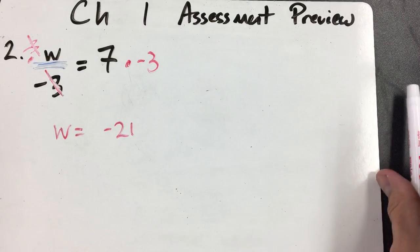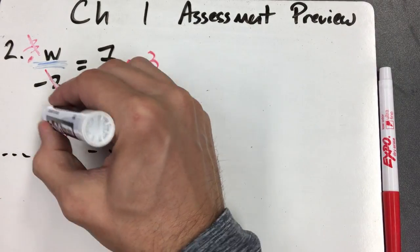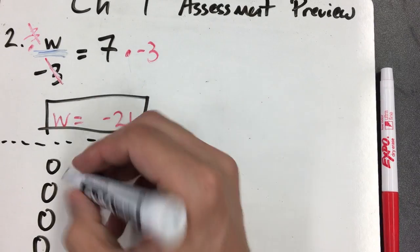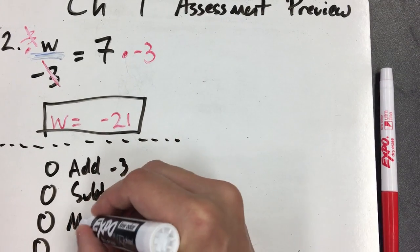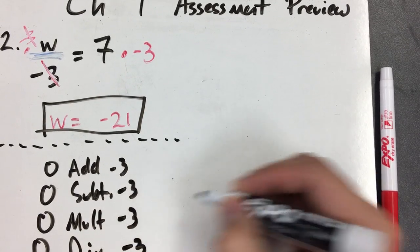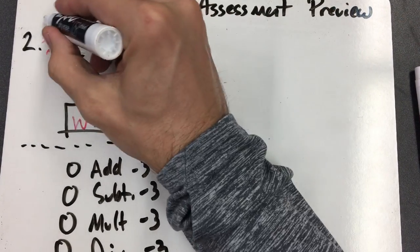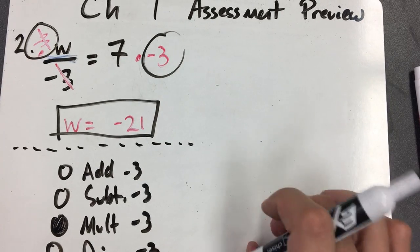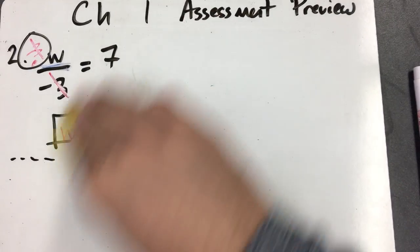Don't forget there's also a question down below. Some of you get so happy finding the answer that you forget the second part. It's going to ask which step you used to solve the equation — choices like add negative 3, subtract negative 3, multiply negative 3, or divide negative 3. Since we did inverse operations and multiplied by negative 3 on both sides, you choose that option. Make sure you put both answers on numbers 1 and 2: the solution to the variable, and the step you took.